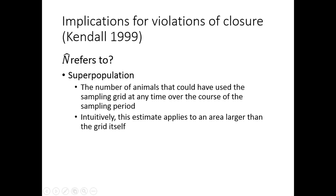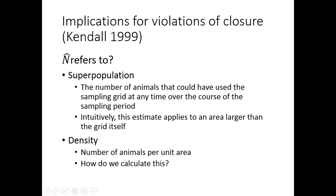The implications for violating the closure assumption is that population size N may actually correspond to the superpopulation — that is, a larger group of animals in the surrounding area. This means the population estimate applies to an area larger than the grid itself. If we want to estimate population density, or the number of animals per unit area, then we may need auxiliary information such as telemetry data to estimate an availability parameter.